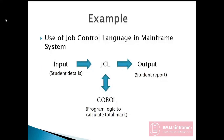Let me explain an example to understand the use of JCL in a mainframe system. For example, we take an input file with student records that contain student name and their marks, and we need to create an output file — a student report — with student name and their total marks. For this example, we use a COBOL program to create logic for calculating the total mark for the student. So this COBOL program takes the student detail file as input and generates the output file. In order to execute the COBOL, we need JCL, Job Control Language.